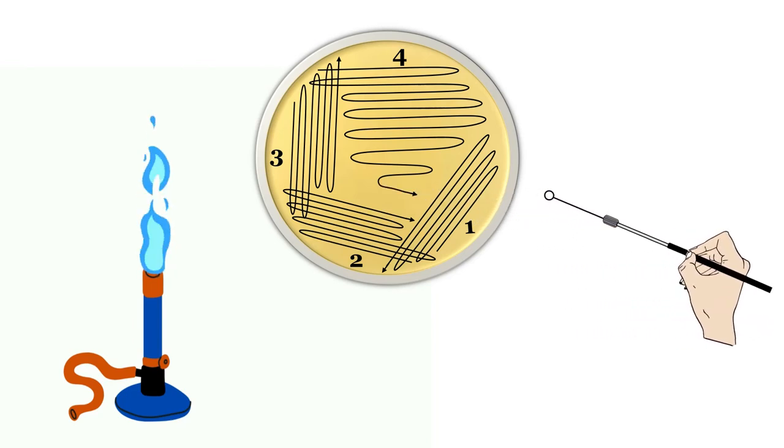In this area, bacterial cell number is very less, so isolated colonies are found here. Be careful and do not touch any other previous streaks.